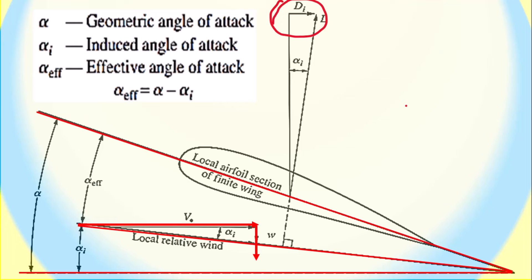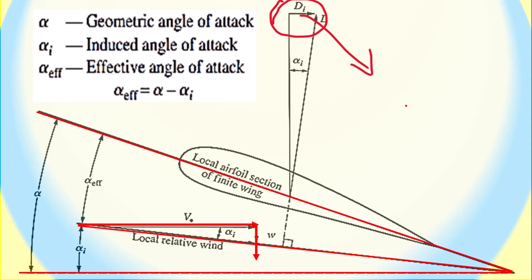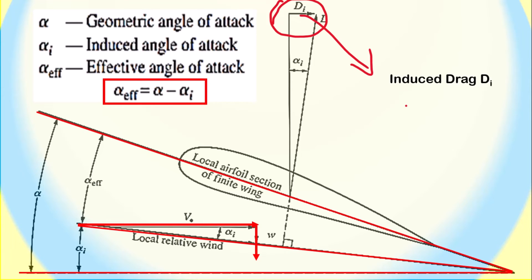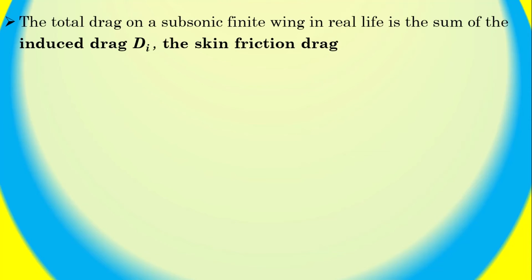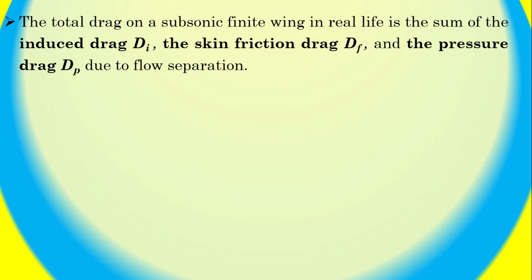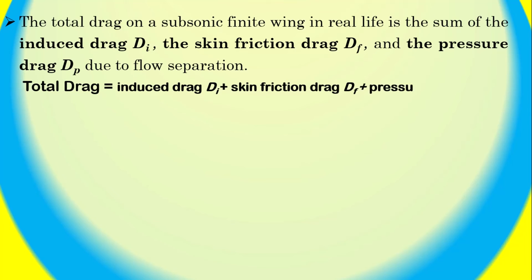The local relative wind is inclined below the direction of free stream velocity by the angle alpha_i, called the induced angle of attack. The angle of attack actually seen by the local airfoil section is the angle between the chord line and the local relative wind, given by alpha_effective, the effective angle of attack: alpha_effective equals geometric angle of attack alpha minus induced angle of attack alpha_i. The total drag on a subsonic finite wing is the sum of induced drag D_i, skin friction drag D_f, and pressure drag D_p due to flow separation.